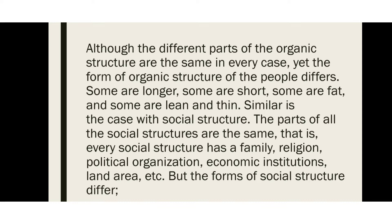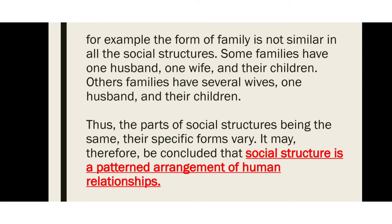The physical structure of a person can be long, short, fat, or lean — each person has particular features. Similarly, social structure has parts that are the same — every social structure has a family, religion, and political organization — but the forms differ. For example, the form of family is not similar in all social structures.